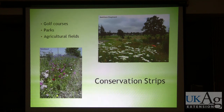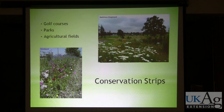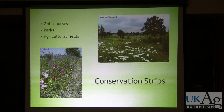Conservation strips are also being used on golf courses and parks to preserve natural enemies and pollinators. There's actually a graduate student at UK, Jenny Condra, who just finished a project evaluating different common flowering plants that support scolia wasps, which are parasitoids of the green June beetle. The green June beetle is a pest at golf courses and other turf settings. The idea is to identify specific flowers that can be used in these landscapes to promote those beneficial insects.